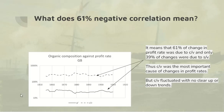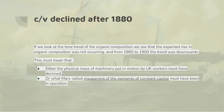The next thing to notice is that C over V, the top line, fluctuates with no clear upward or downward trend — not quite what Marx expected. From 1880 it actually declined, so the expected rise in the organic composition wasn't occurring; from 1880 to 1900 it actually fell. Why could this have happened? Either the mass of machinery put in motion by UK workers declined, or what Marx called the cheapening of the elements of constant capital must have been in operation.